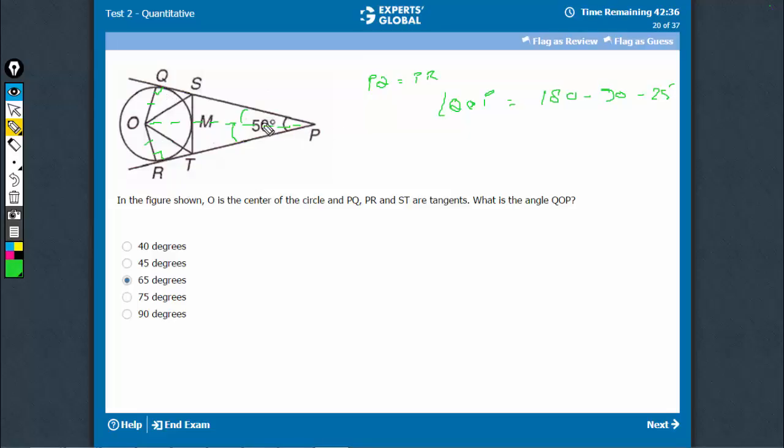So, 180 minus this angle minus this angle would be this angle, which is 65. This is the right answer.